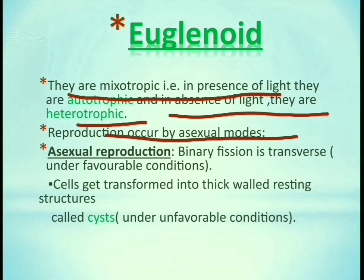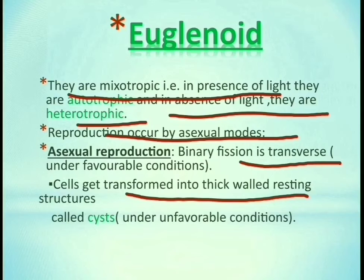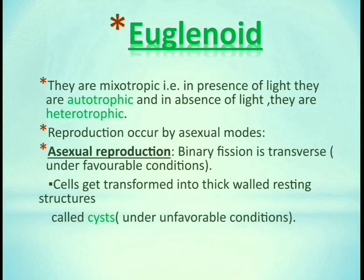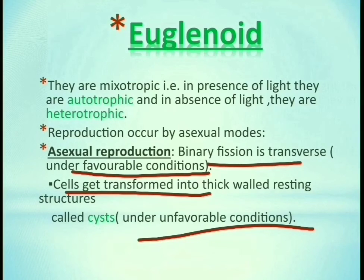Reproduction in euglenoids occurs by asexual mode — specifically binary fission in the transverse direction. Under favorable conditions, they divide by binary fission. Under unfavorable conditions, the cell gets transformed into a thick-walled resting structure called a cyst, so that they cannot reproduce until conditions improve.